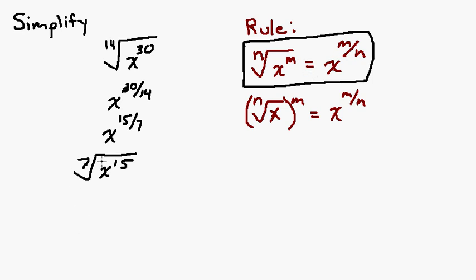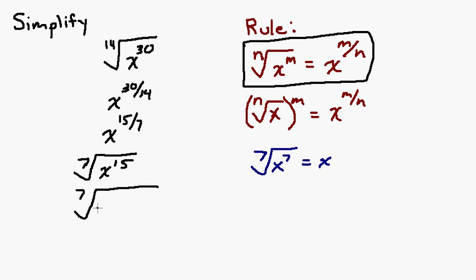Now, with the 7th root of x to the 15th, since it's a 7th root, we use the fact that the 7th root of x to the 7th is just x. We want to see how many x to the 7ths we can break x to the 15th into. So x to the 15th equals x to the 7th times x to the 7th times x to the 1st.